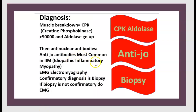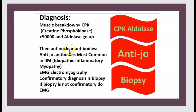To make the diagnosis, check CPK (creatine phosphokinase), aldolase, anti-Jo antibody, and perform a biopsy. With muscle breakdown, CPK can exceed 15,000 and aldolase is elevated. Anti-nuclear antibody and anti-Jo antibody are important markers in idiopathic inflammatory myopathy. The confirmatory diagnostic test is biopsy, but if biopsy is not confirmatory, electromyogram (EMG) is performed.